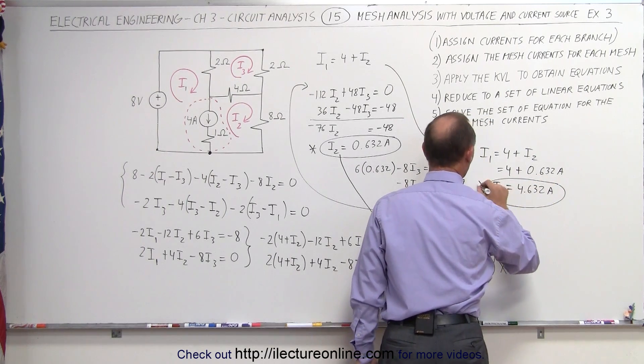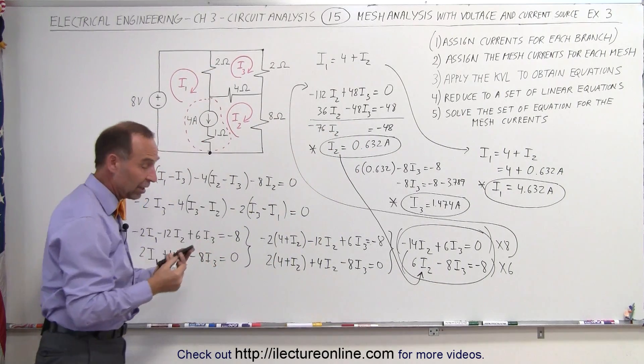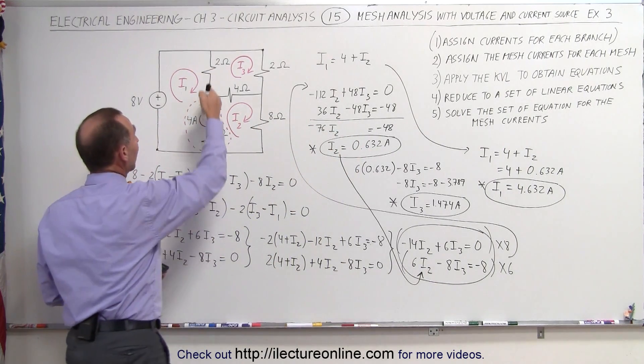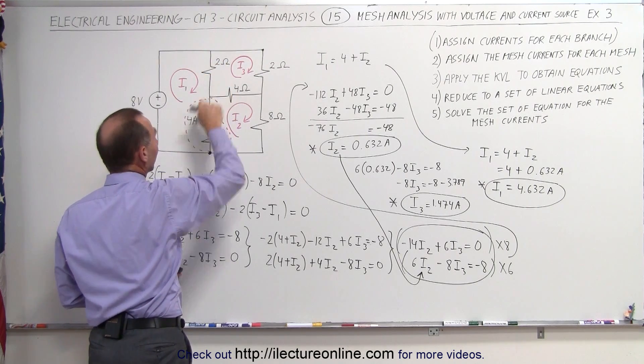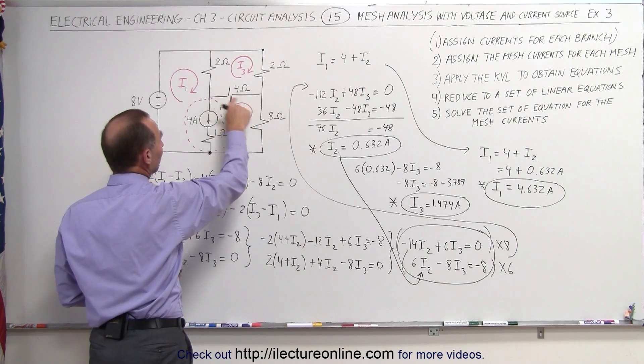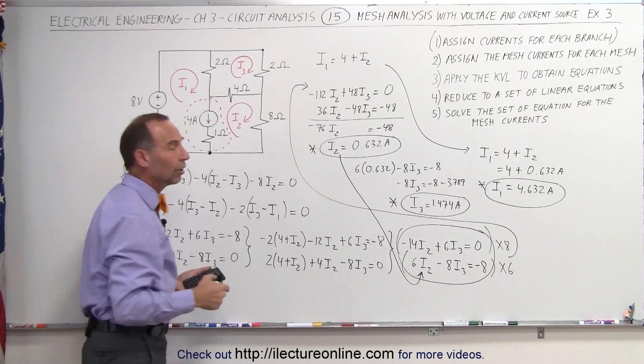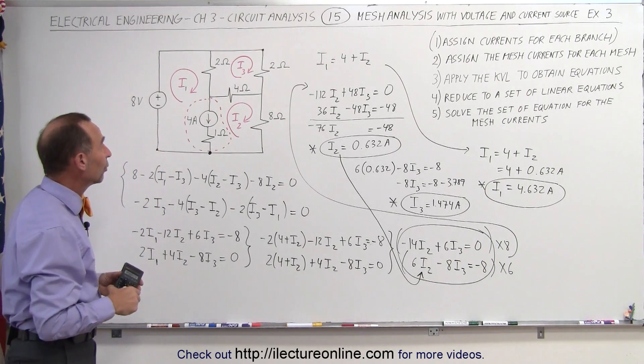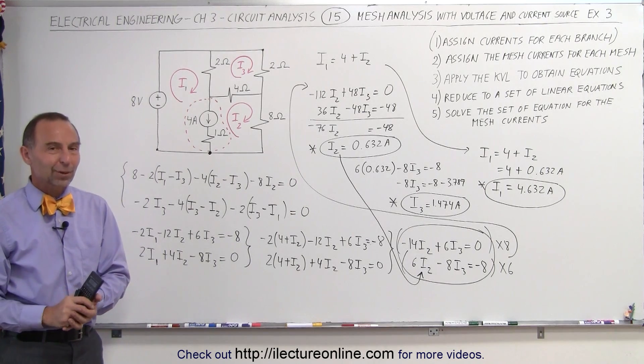And there's our third mesh current, which allows us to find the current in each of the branches. If you now want to assign a current, for example, in this branch right here, that would simply be I1 minus I3. If you want to assign a current in this branch right here, that would simply be I2 minus I3, and so forth. So that would make it easier to find the currents in any of the branches once you find the three mesh currents. And that's how we do that.